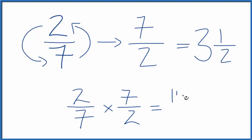Two times seven is fourteen. Seven times two is fourteen. And fourteen divided by fourteen is one. So we did this correctly.